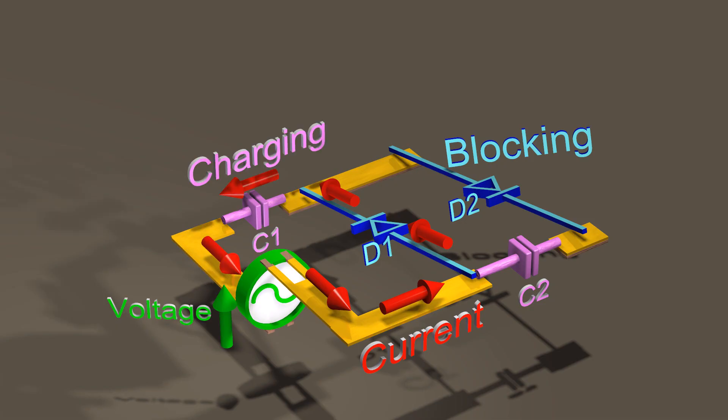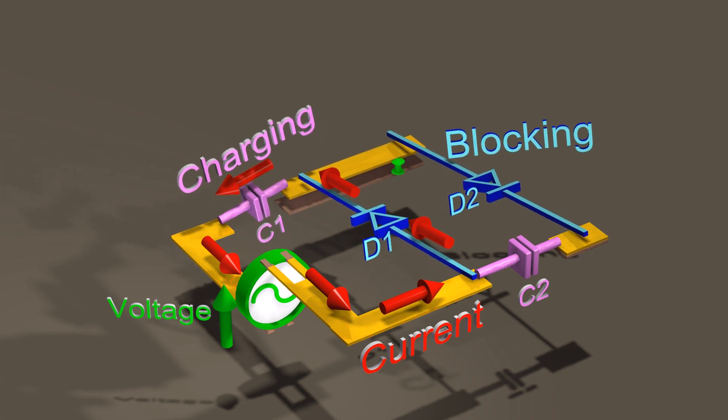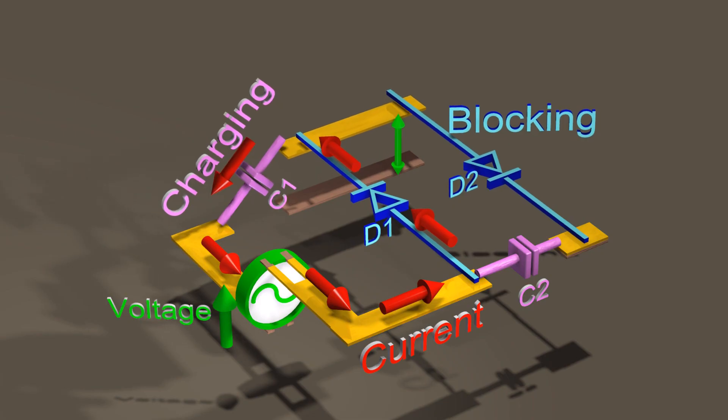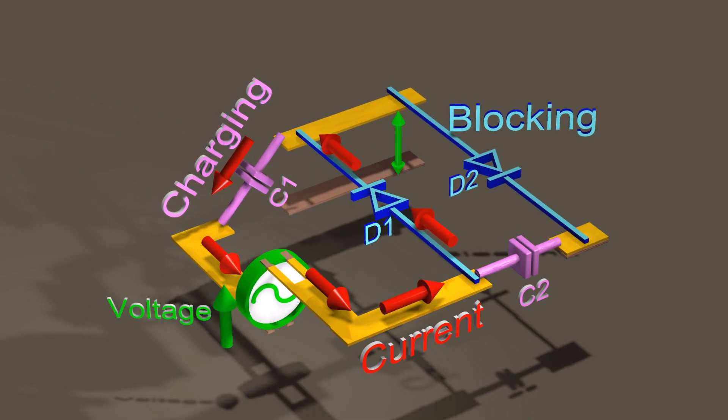At this moment in time, diode 2 is blocking the current trying to move through it in the backwards direction, and diode 1 is allowing current to move through it in the forward direction. Therefore, current will flow into capacitor 1 and cause it to develop a voltage across it.